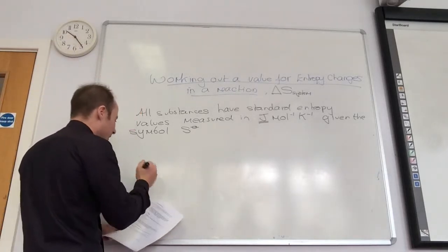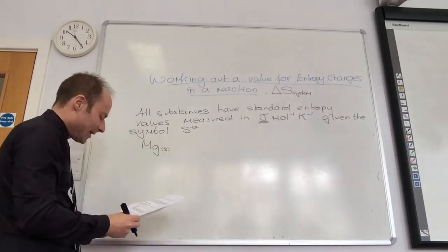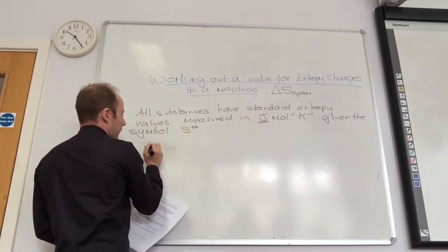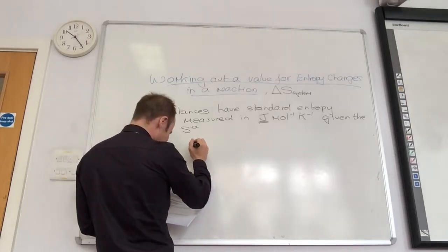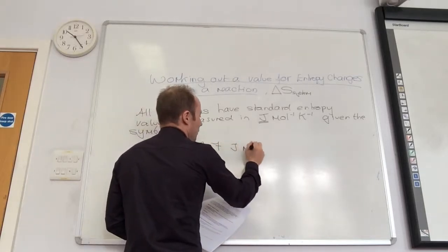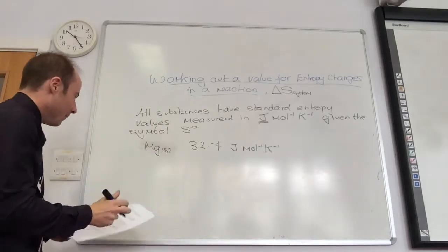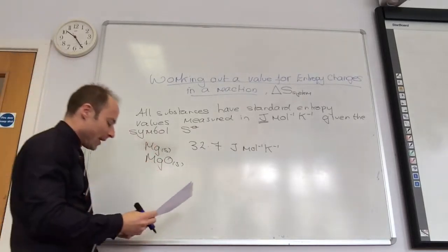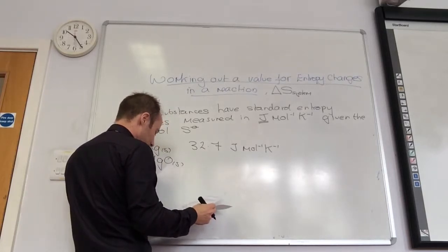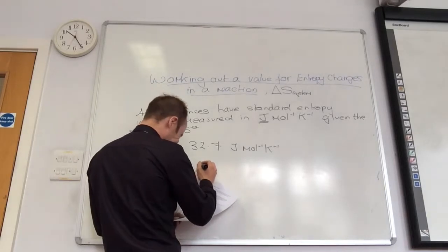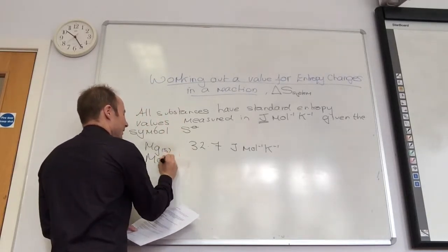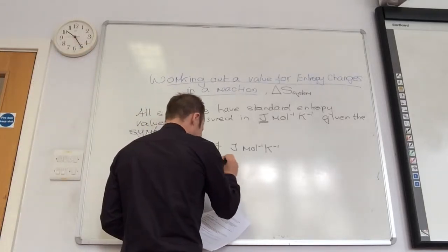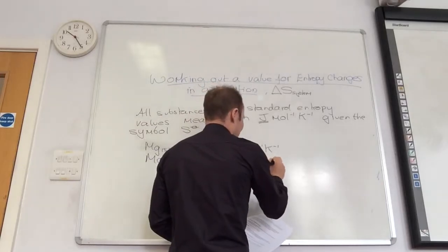Magnesium in the solid state has a value of 32.7 joules per mole per kelvin. Magnesium carbonate as a solid — higher or lower? Higher, yes. It's 65.7 joules per mole per kelvin. Why? Because magnesium carbonate has more atoms — magnesium, carbon, and three oxygens — so it's more disordered.